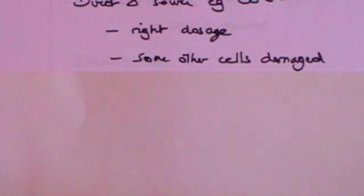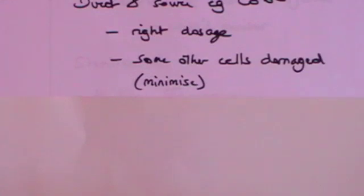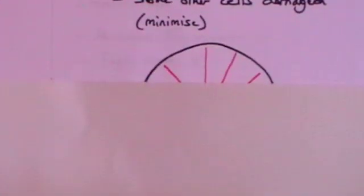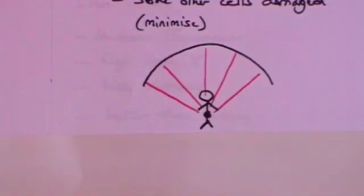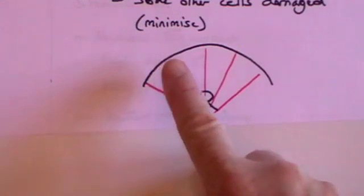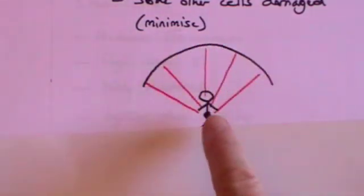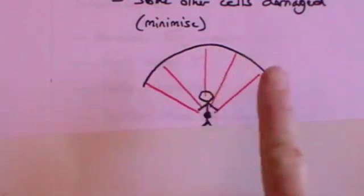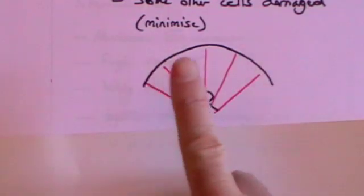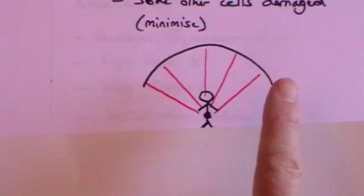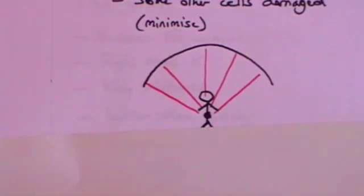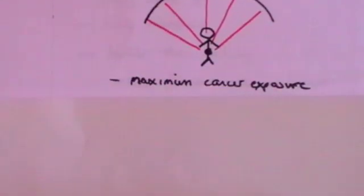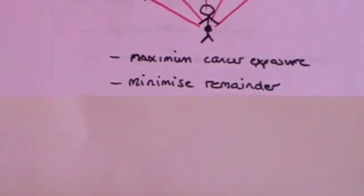You need the right dosage, which is calculated in the hospital, and you have to recognise that some ordinary cells will be damaged, so you want to minimise that. The body is placed on a table and the gamma source goes round, focused on the tumour. Although the rays will pass through different parts of the body as the source swings round, in all cases the gamma source is focused on the tumour you want to kill — so you maximise the cancer exposure but minimise the remainder.